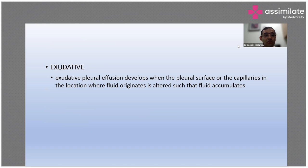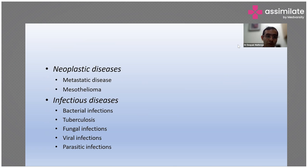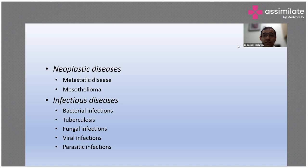Coming to exudative effusion, this happens only when the pleural surface or the capillaries in the location where fluid is originating is altered. If capillary permeability is increased or there is destruction of the capillaries or the pleural surface, it will cause an exudative effusion. Causes can range from neoplastic disease like metastatic disease or mesothelioma, or infectious disease such as bacterial infection. Tuberculosis is one of the commonest causes we see in our country. Since we are in a tubercular endemic country, most often we find tuberculosis. Then we have fungal infections, viral infections, and certain parasitic infections as well.